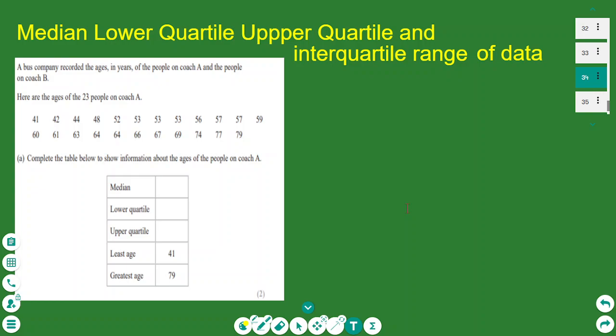So these numbers are in ascending order, so the lowest is the first and the highest is the last. We have the least age is 41, the greatest age is 49.